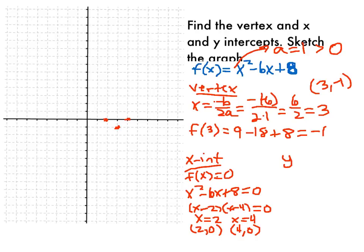And now finally, the y-intercept I can find by taking x equal to 0. So f of 0, what I'm going to get is 0 minus 0 plus 8. So when I plug 0 into my function, I get 8. So my y-intercept is going to be 0 comma 8.